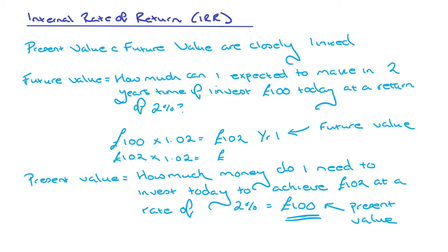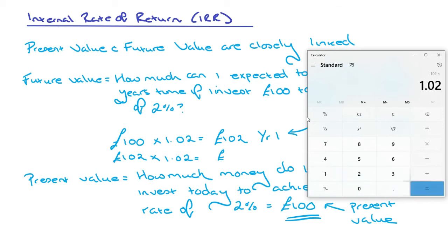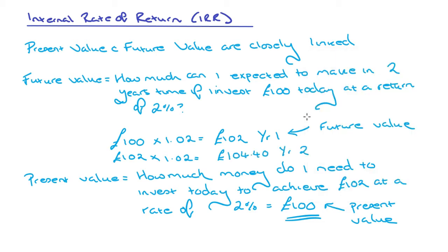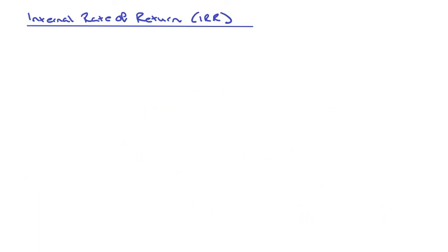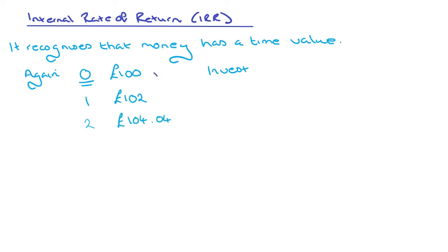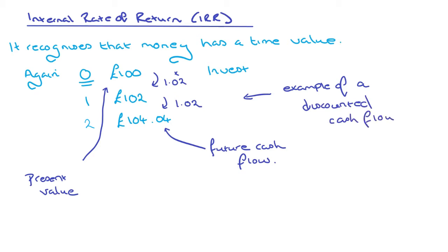If I continue to receive 2% a year, that £102 by year two is now worth £104.40. Internal rate of return recognizes that money has a time value. In a table, in year zero you've got £100, year one you've got £102, and year two you have £104. Each year you just times it by 1.02. The present value is £100, and the future cash flows are £102 and £104.40. All of this is an example of a discounted cash flow, where we're discounting the present value to achieve what we know the future value is going to be. It's also known as compound interest.